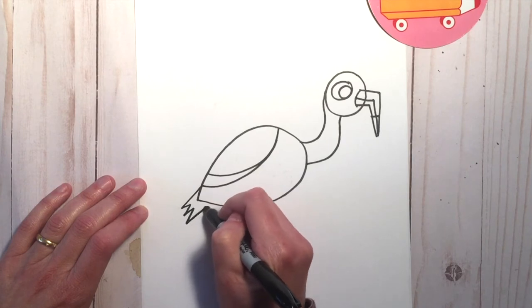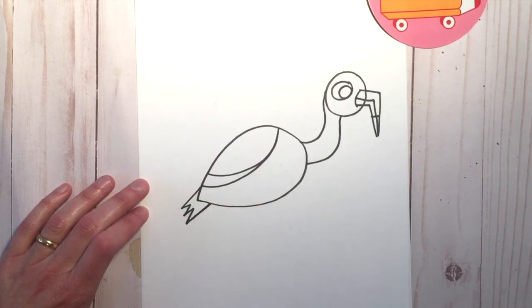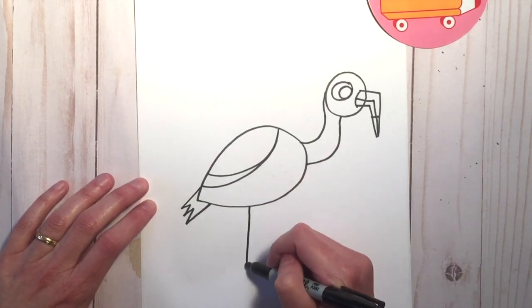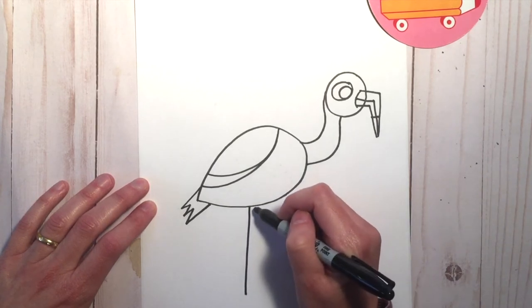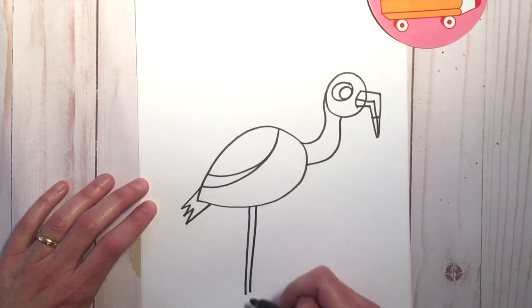A little jaggedy tail, then one line here and then repeat it next to it for one leg.